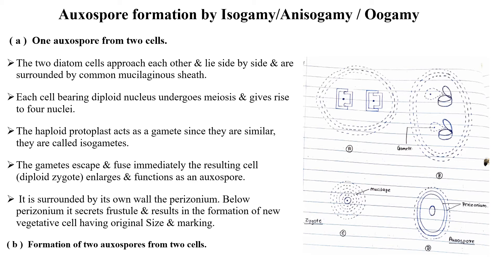Now, auxospore formation from two cells: two diatom cells which have become reduced in size after binary fission come close and lie side by side, enveloped by mucilaginous secretion. The nucleus inside each is sporophytic and diploid. It undergoes meiosis and produces four haploid nuclei in each cell. Out of the four, three degenerate and the remaining two fuse to give rise to a zygote.